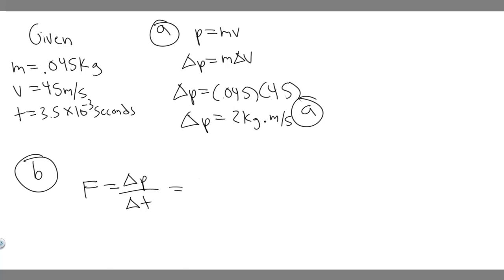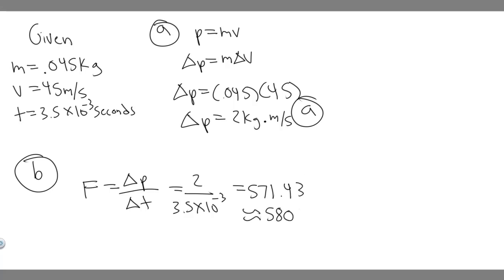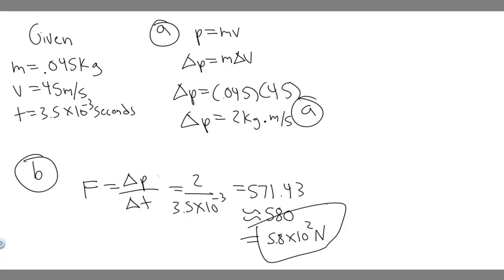So we just plug in the numbers. The change in momentum is 2, divided by the change in time, 3.5 times 10 to the minus 3 seconds. If you go ahead and do this, 2 divided by 3.5 times 10 to the minus 3 gives you 571.43. I'm going to round this to 580, and express it in scientific notation as 5.8 times 10 to the 2. Force is measured in newtons, so the answer is 5.8 times 10 to the 2 newtons. This is your answer to B.